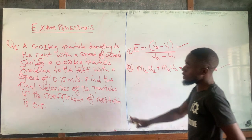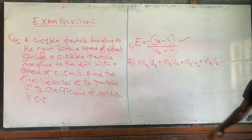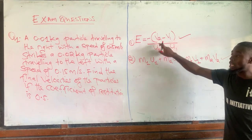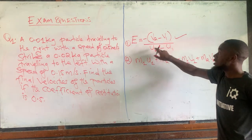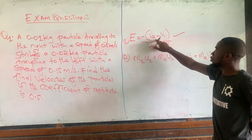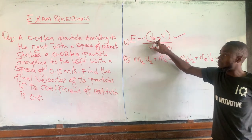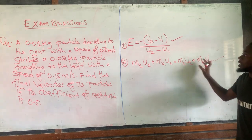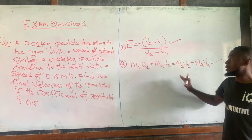The key strategy is: whatever you do to the coefficient of distribution equation, you also do to the momentum equation. Because they ask us to find the final velocities — v1 and v2 — if in the first equation we decide to make v2 the subject of the formula, then in the momentum equation we also make v2 the subject. At the end, we solve the simultaneous equations by equating them to each other.